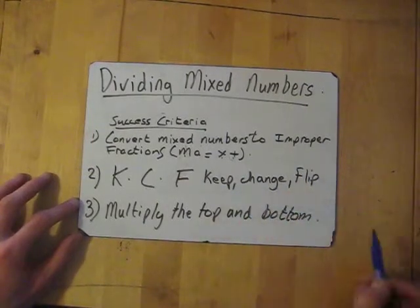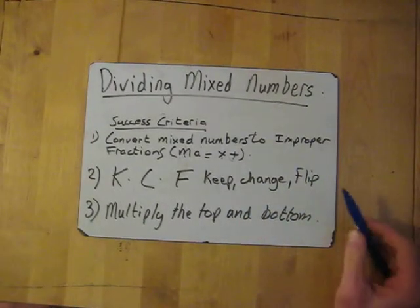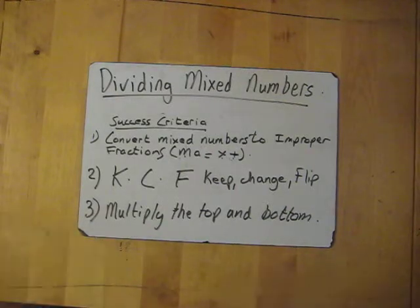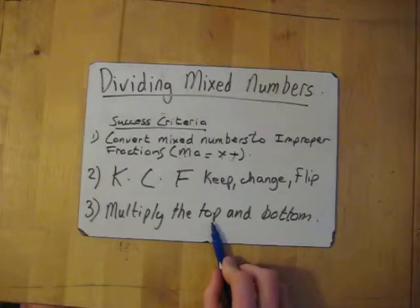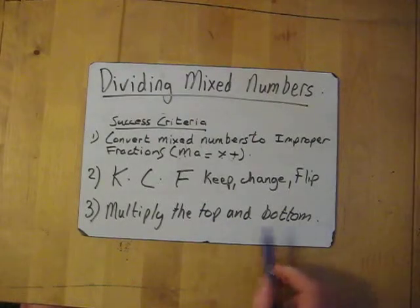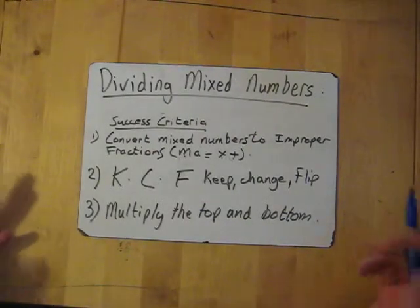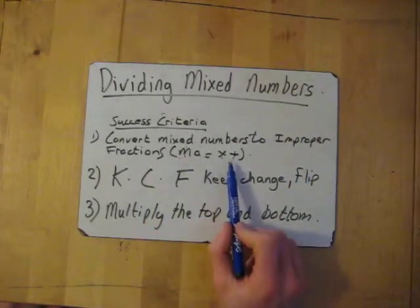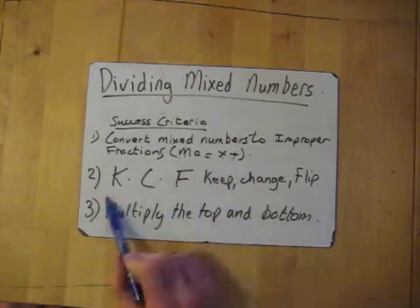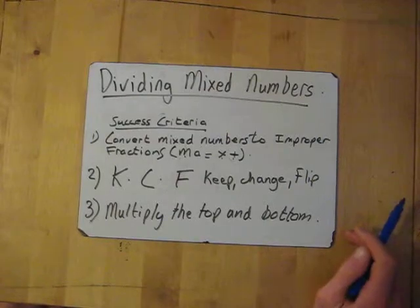Keep, change, flip. After you've done that, what you have now is a multiplication. Multiplication of fractions is very simple — all you do is multiply the top numbers and multiply the bottom numbers, and that is your answer. So: convert mixed numbers to improper fractions, then KCF — keep, change, flip — then multiply the top and multiply the bottom.